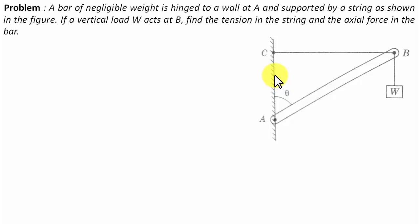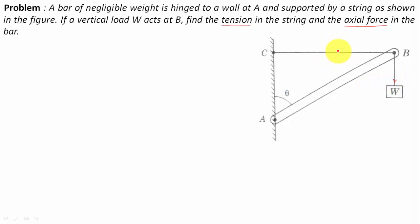One end of the string is attached at point C onto the wall. To start the problem, let us determine what we need to calculate: the value of tension T and the axial force. When load W is applied in the downward direction, there will be some tension developing — let's call it T.